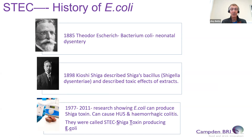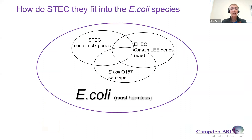Between 1977 and 2011, a range of research showed E. coli can produce Shiga toxin and can cause hemolytic uremic syndrome (HUS) and hemorrhagic colitis — bloody diarrhea. This group of organisms tended to be referred to as Shiga toxin-producing E. coli, STEC, or also VTEC.